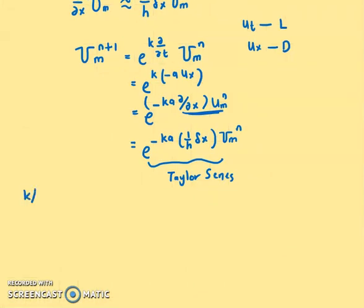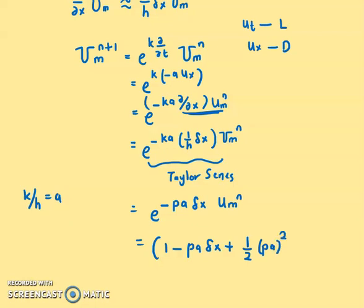So first, we need to change k over h equals to ρa. So we have e^(-ρa δx) u_m^n. Now, expanding negative ρa delta x. So we have 1 minus ρa delta x, plus half ρa squared delta x squared, this whole thing, u_m^n.